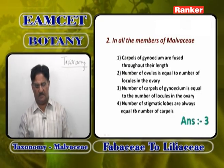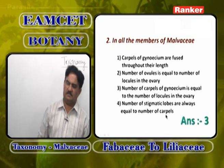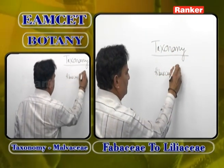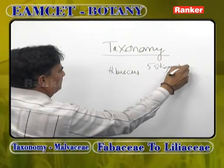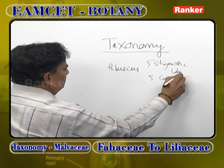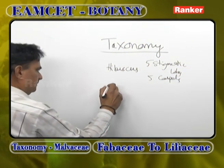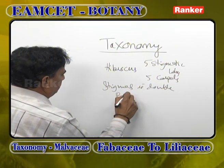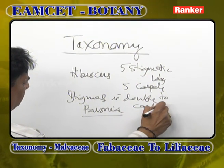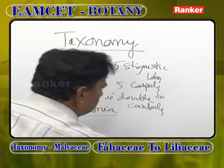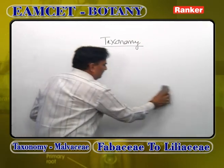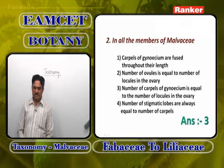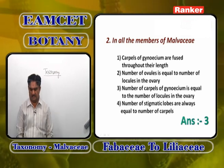The statement that the number of stigmatic lobes is always equal to the number of carpels is also wrong. In Hibiscus, stigmatic lobes are 5 and carpels are 5, but in some plants like Pavonia, the number of stigmas is double the number of carpels. So the only correct option is that the number of carpels of the gynoecium is equal to the number of locules in the ovary — option 3 is the correct answer.